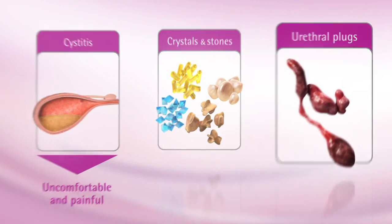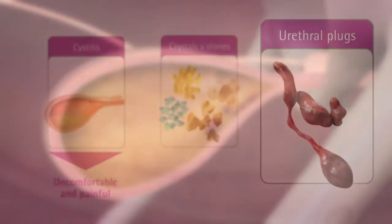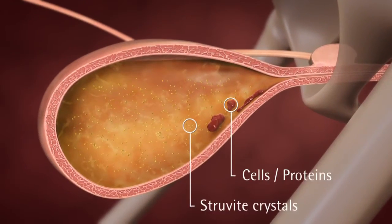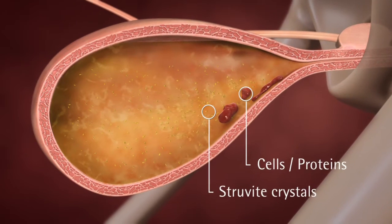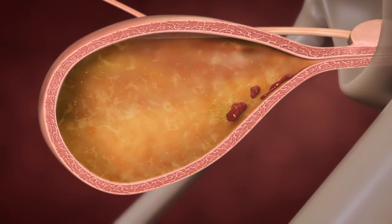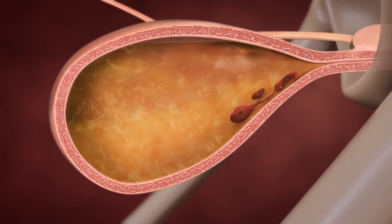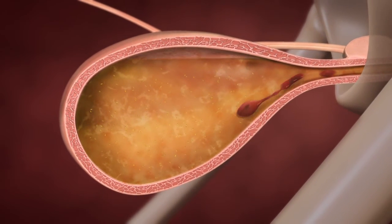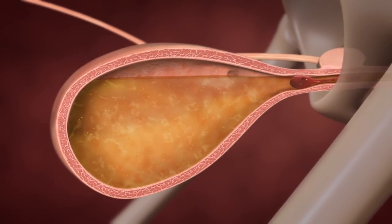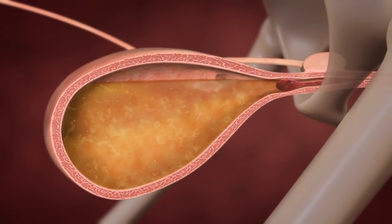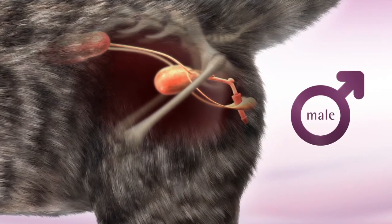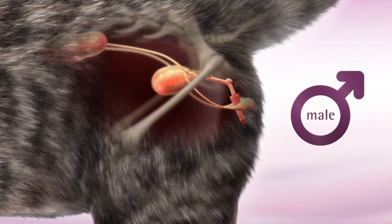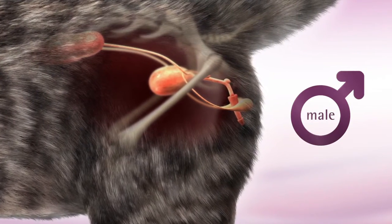Such blockages can also be caused by urethral plugs. These are most often composed of struvite crystals, cells and proteins. Due to their long and narrow urethra, male cats are more susceptible to blockages.